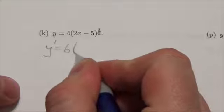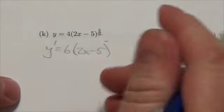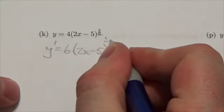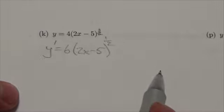Okay, that's going to end up being 6 times 2x minus 5 to the 1 half. I almost did that incorrectly there, because I'll just take 1 away from the 3 halves there.